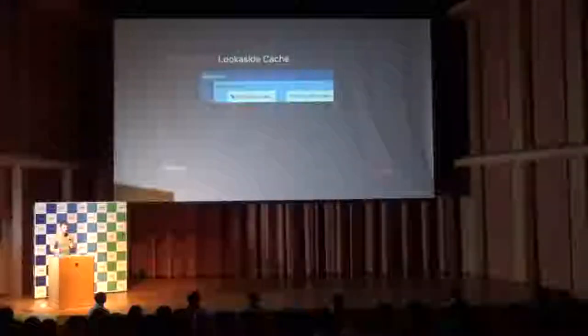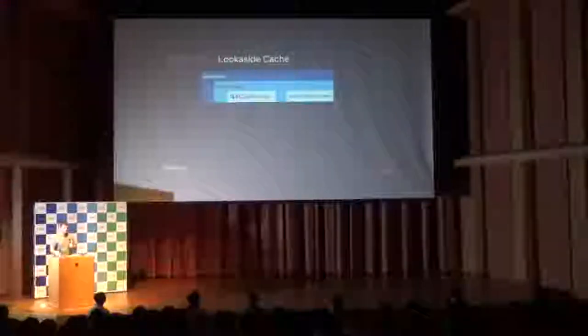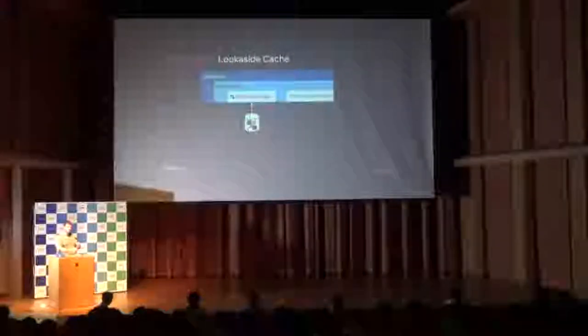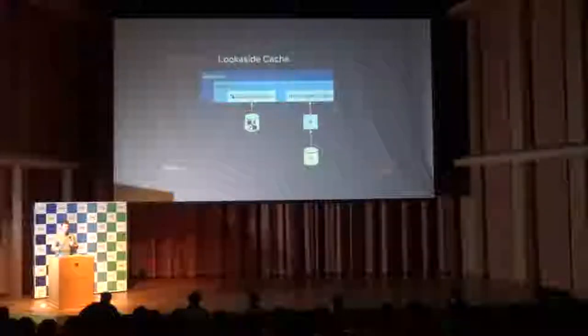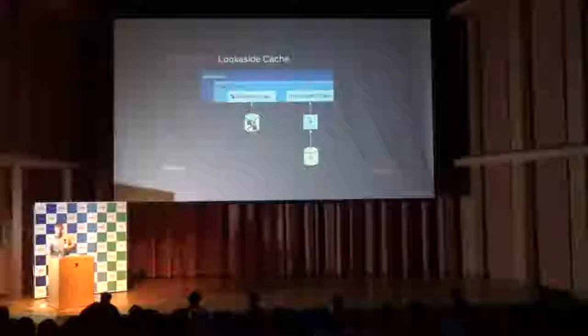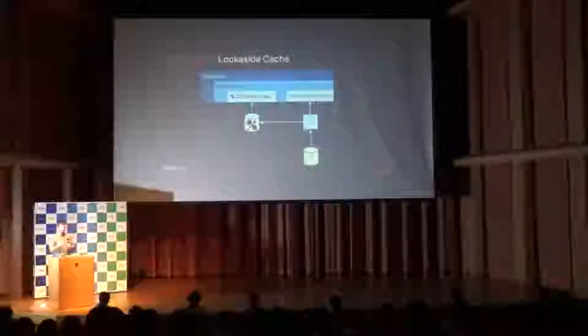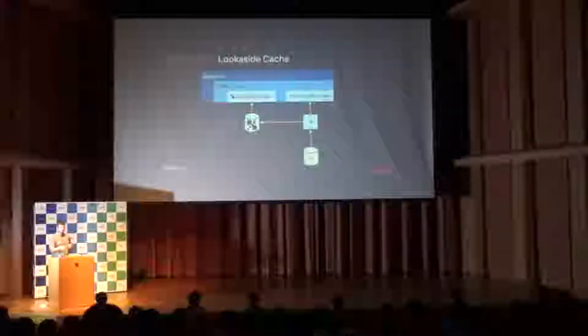Now we're going to zoom out to see how it's used in real-world systems inside Netflix. The first use case is what's called a look-aside cache — for things like subscriber information or the A/B tests that you're in. The application wants to get something from the client library, which will ask the cache first. If it's not there, it will go to its service, and behind that is a database — typically Cassandra at Netflix. Then it's the responsibility of the service to write that data back into EVcache as it responds, so the next look-up is much faster.